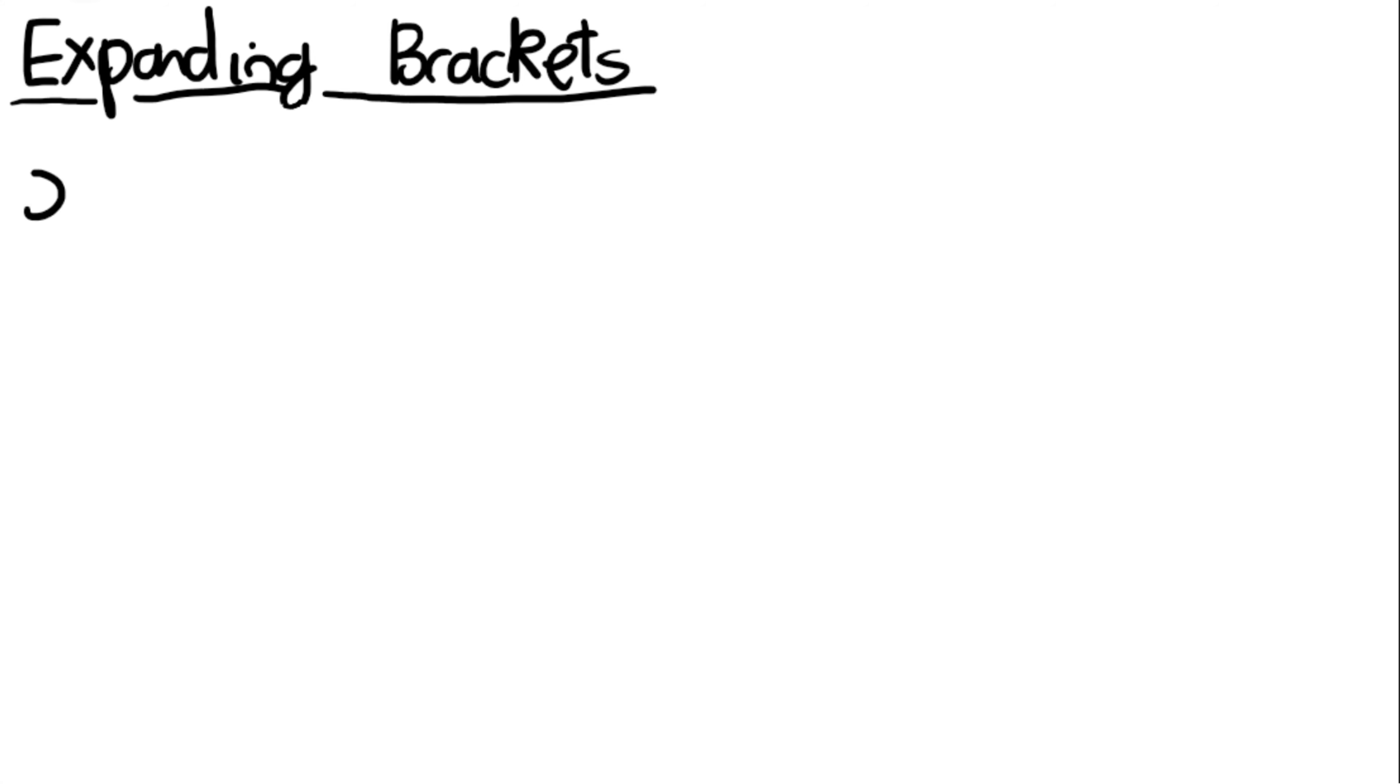Okay, another example. x and then bracket 2x plus 4. This looks a bit confusing when you first look at it because the x isn't in a bracket, but because it's a term on its own, you don't need to use a bracket. So it's just the same as before. x times 2x is 2x squared, and x times 4 is 4x.